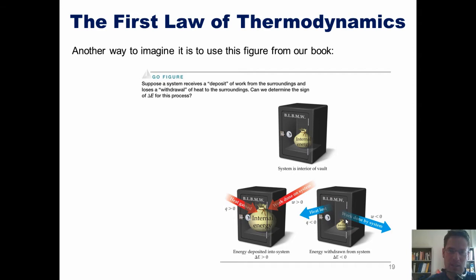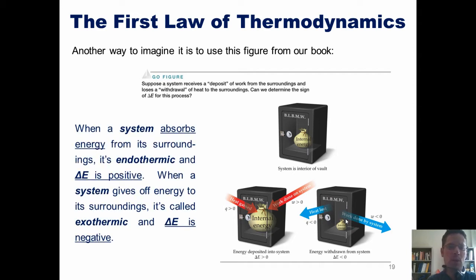Now, one thing I want you to remember is this: when a system absorbs energy from its surroundings, we call that endothermic, and it has a positive delta E. In the metaphor used here, we can imagine that as being a deposit into the system from the surroundings. Because we've deposited energy, either in the form of heat or work, delta E is positive.